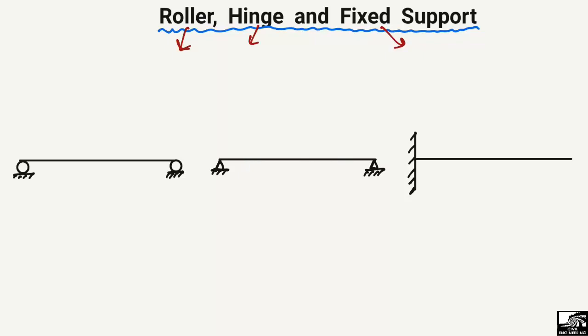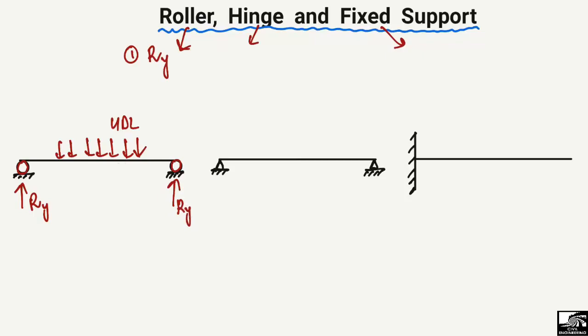Starting with the roller support: a roller support is a type of support that can only take the vertical reaction. For example, if there is any load — uniformly distributed load or a concentrated load — acting on a beam, the roller supports, which are represented by circles, can only take the vertical reaction. If there is any horizontal force acting on the beam, the roller support will not be able to resist it. It is only responsible for the vertical load, represented by R_Y.